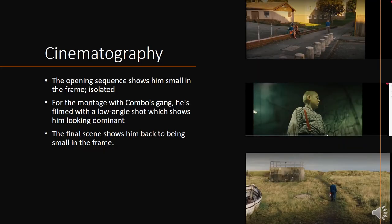For cinematography: Sean is shown to be quite isolated in the frame, with lots of extreme wide or wide shots to show how small he is. Further on in the film, when he is radicalised and joins Combo's gang, we get tighter shots where the camera is placed lower, giving him power. This returns in a cyclical motion at the end scene where he goes back to the beach and throws the flag into the sea, and the camera again shows how small and vulnerable he is within the frame.